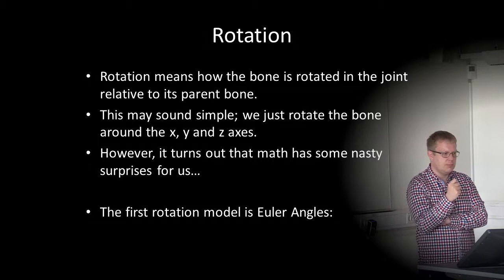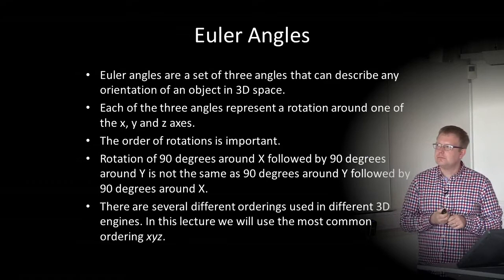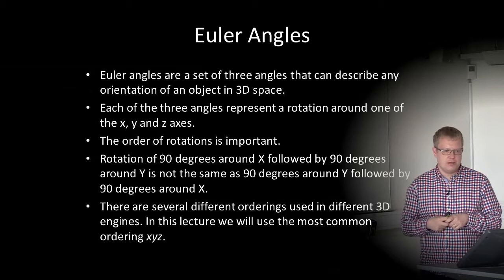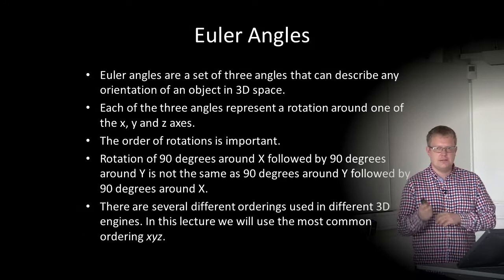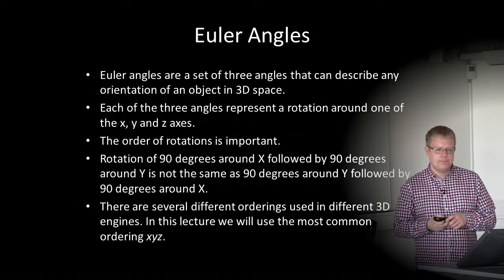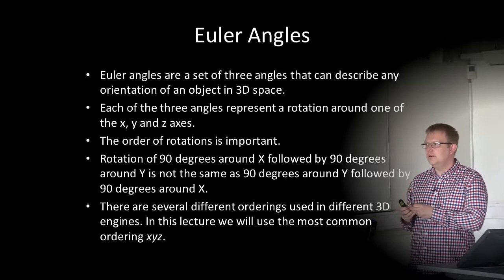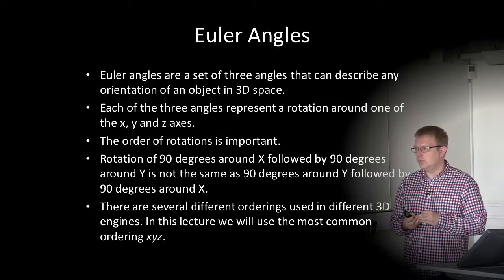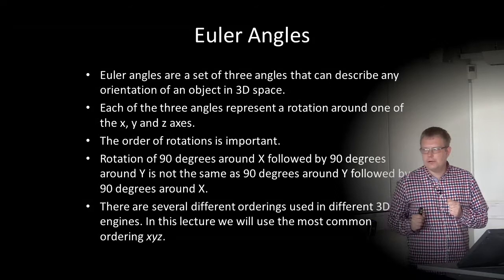The first rotation model is Euler angles. It's a set of three angles that describe any orientation of an object in 3D space. Each of the three angles represents a rotation around one of the X, Y, and Z axes — for example, rotation around Y, then X, then Z. The order of rotations is important: rotating 90 degrees around X followed by 90 degrees around Y is not the same as 90 degrees around Y followed by 90 degrees around X. It's not a commutative operation. There are several different orderings used in different 3D engines.